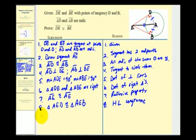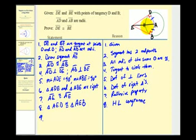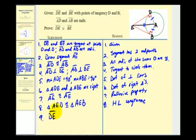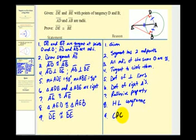Because we have congruent triangles, we know that corresponding parts are congruent. So we now have our proof: segment DE is congruent to segment BE. The reason is that corresponding parts of congruent triangles are also congruent.